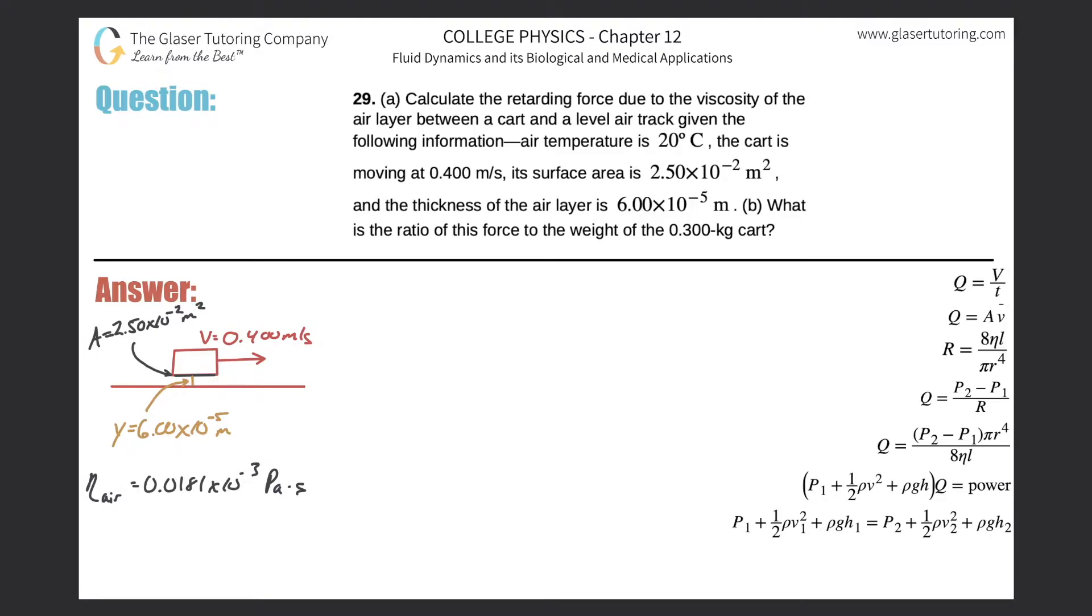Number 29, letter A: Calculate the retarding force due to the viscosity of the air layer between a cart and a level air track. Given the following information: air temperature is 20°C, the cart is moving at 0.4 meters per second, its surface area is 2.5 × 10^-2 m², and the thickness